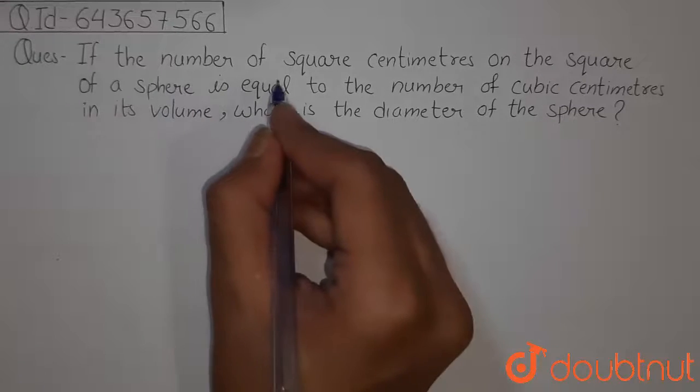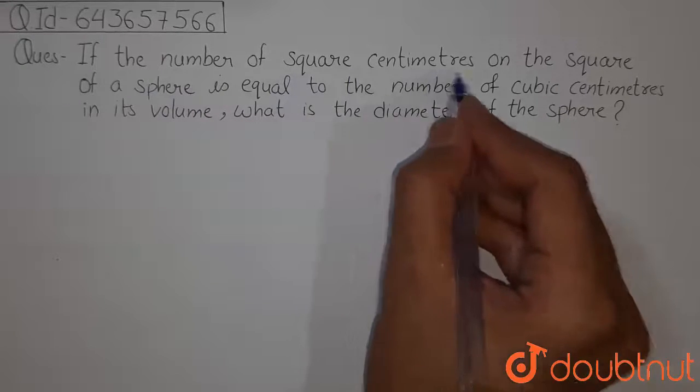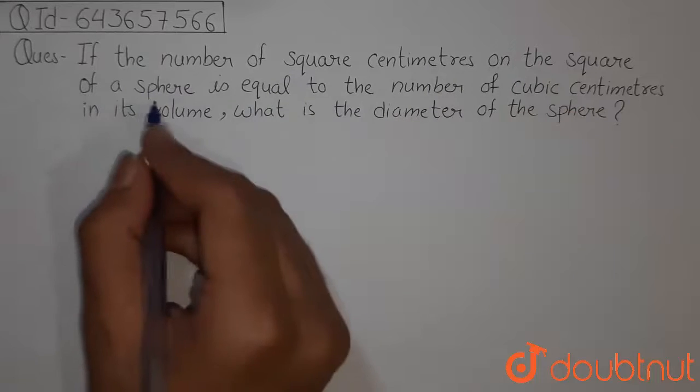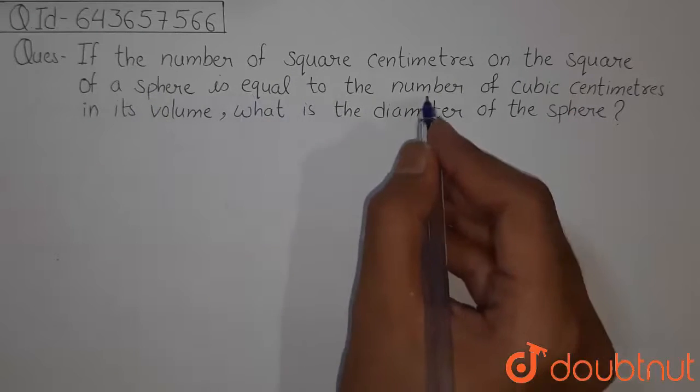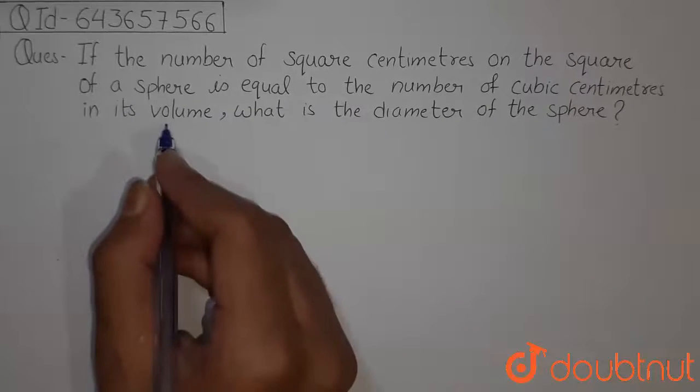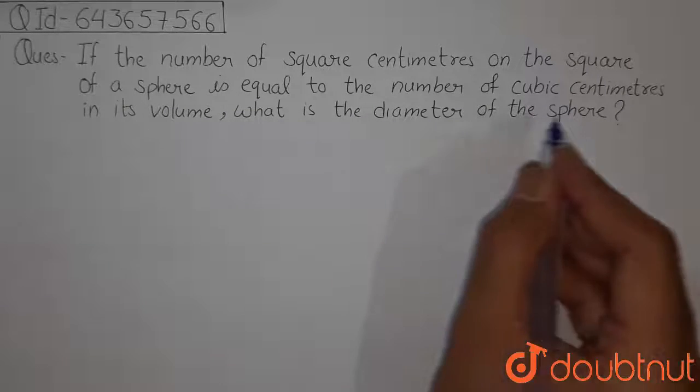Question is: if the number of square centimeters on the square of a sphere is equal to the number of cubic centimeters in its volume, what is the diameter of the sphere?